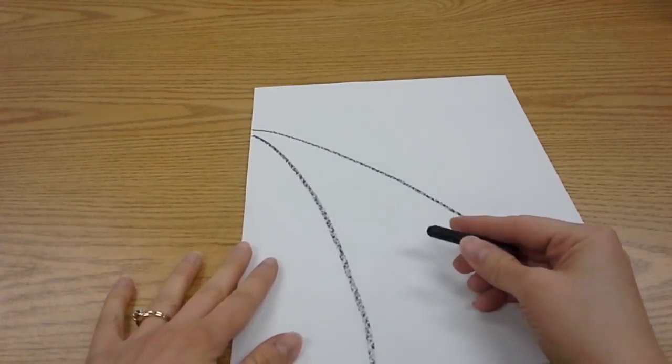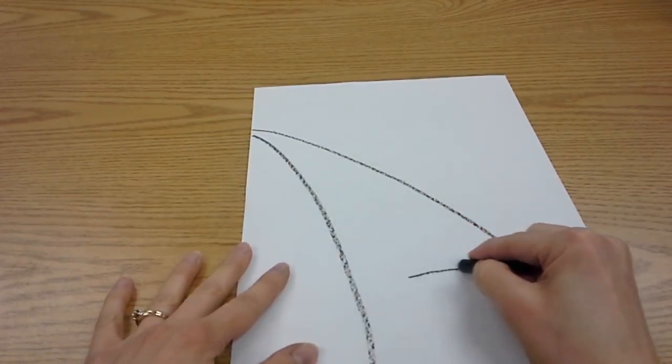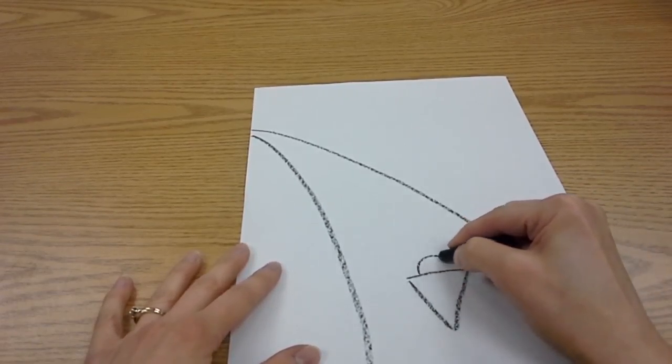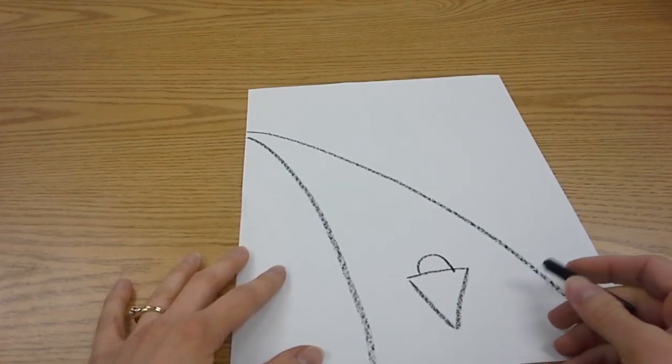And then we need a race car because that's what it's all about. So you might want to start with maybe a triangle for the car. I can have a half circle for part of the driver.